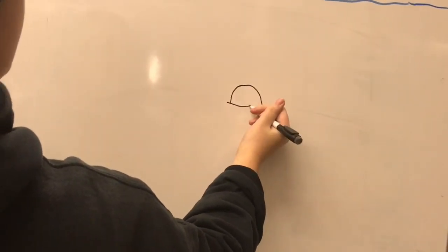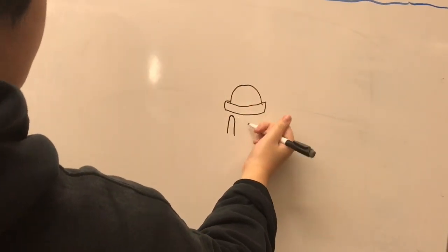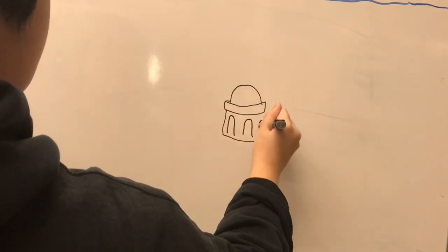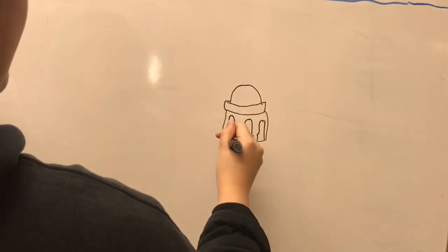The Panopticon is a type of prison system where each cell is arranged in a circle with the watchtower in the center, which allows prisoners to be under constant surveillance.